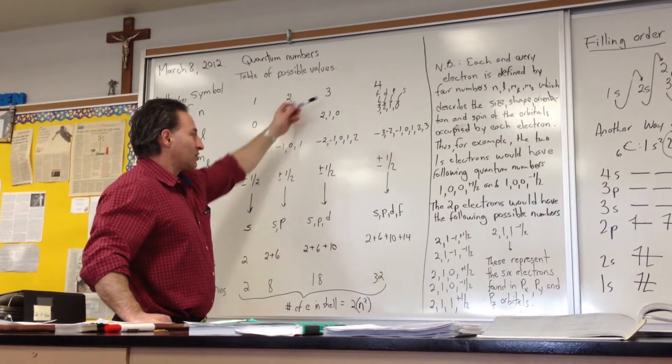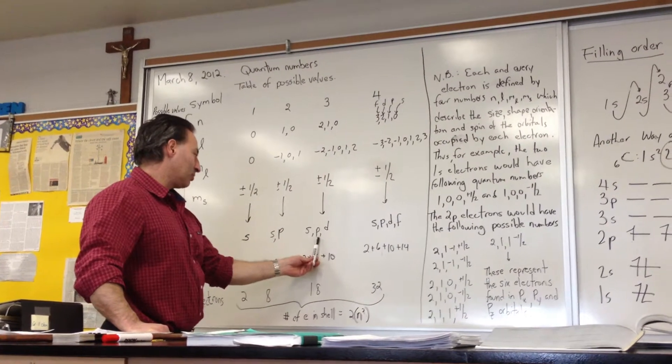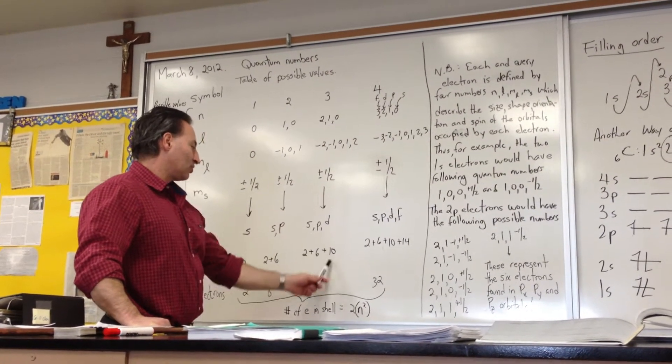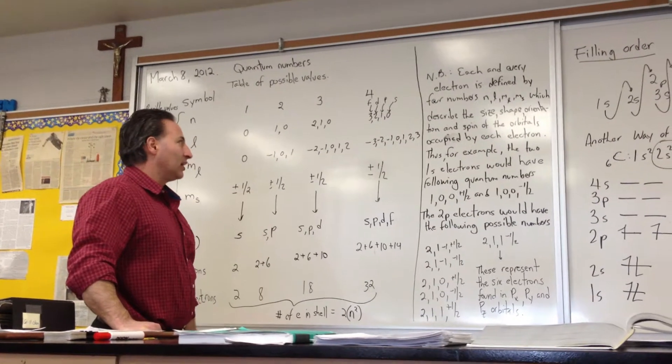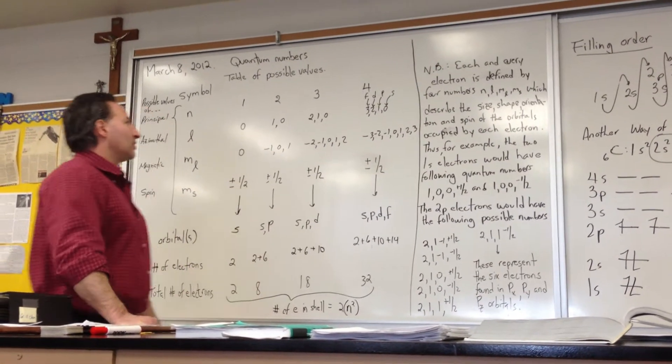So if the principal quantum number is three, you can have s orbitals, p orbitals, and d orbitals for a total of 18 electrons being held at the principal quantum number three.